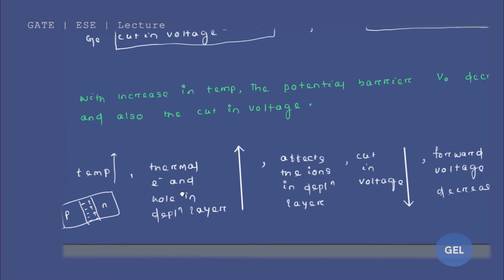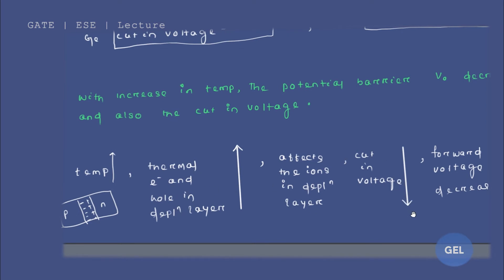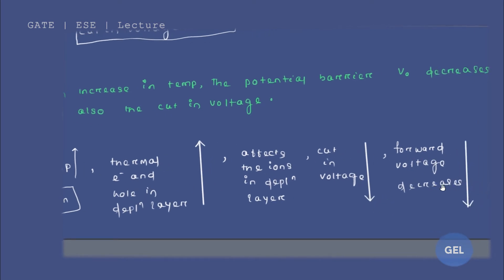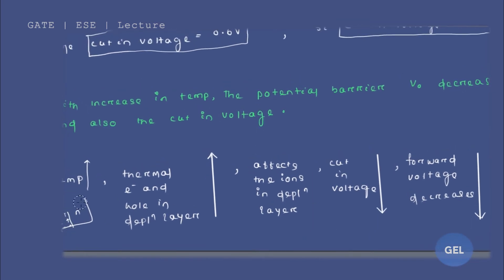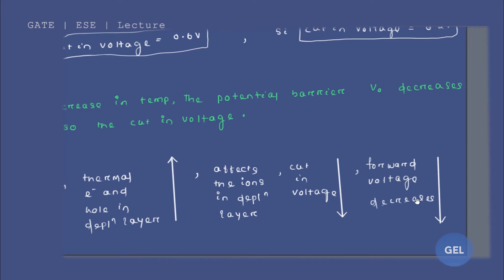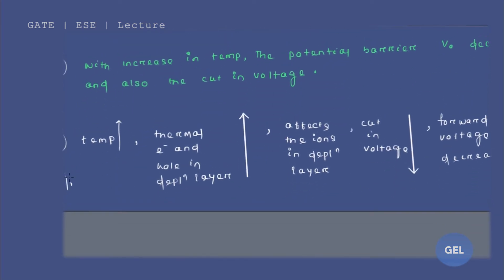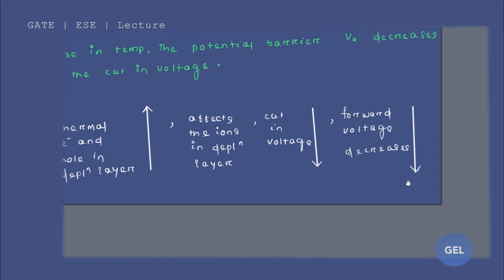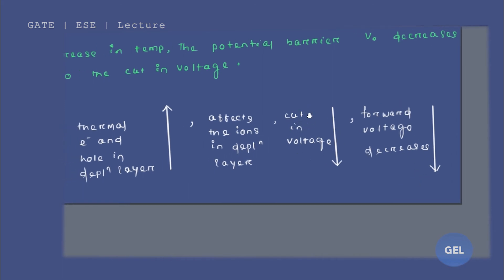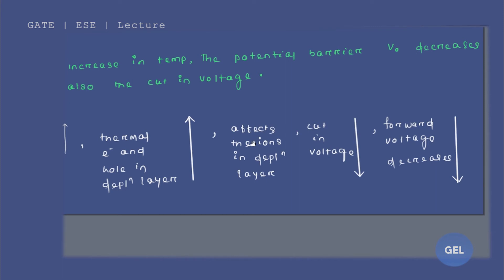These ions will get affected. Due to the increment of thermal electron-hole pairs, the ions present in the depletion layer get affected. Due to this, your cut-in voltage decreases and your forward voltage also decreases. With increase in temperature, your forward voltage decreases because the immobile ions in the depletion layer get affected due to the variation in thermal electron and hole pair generation.